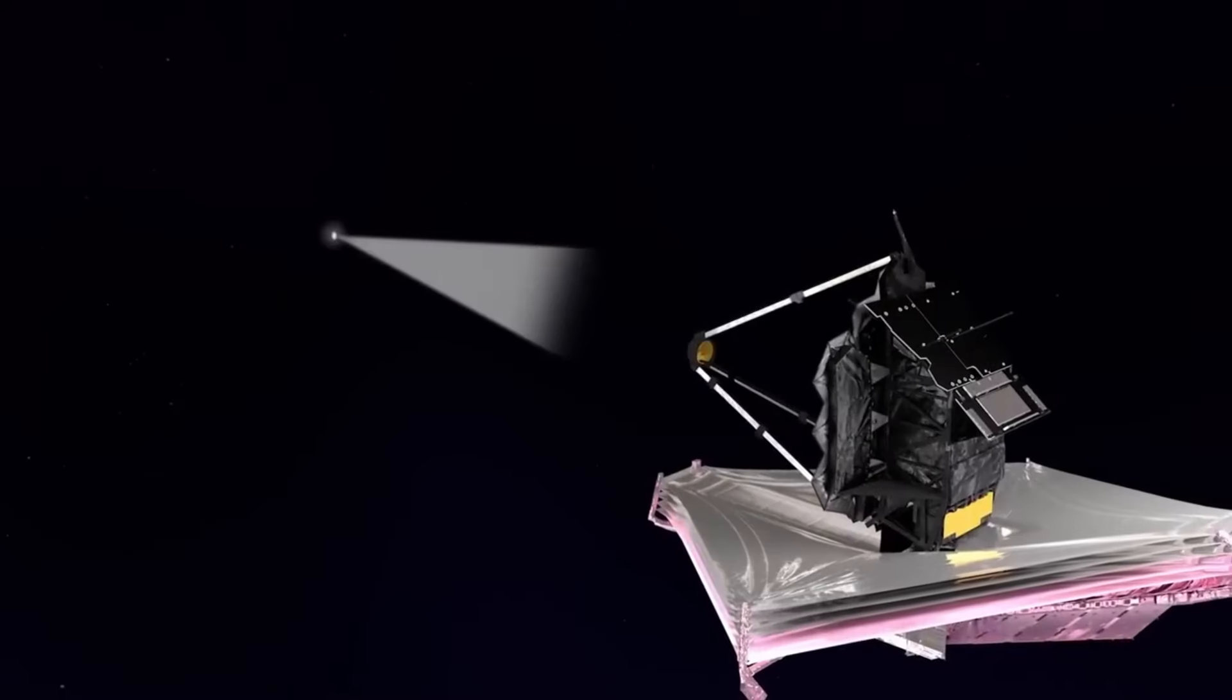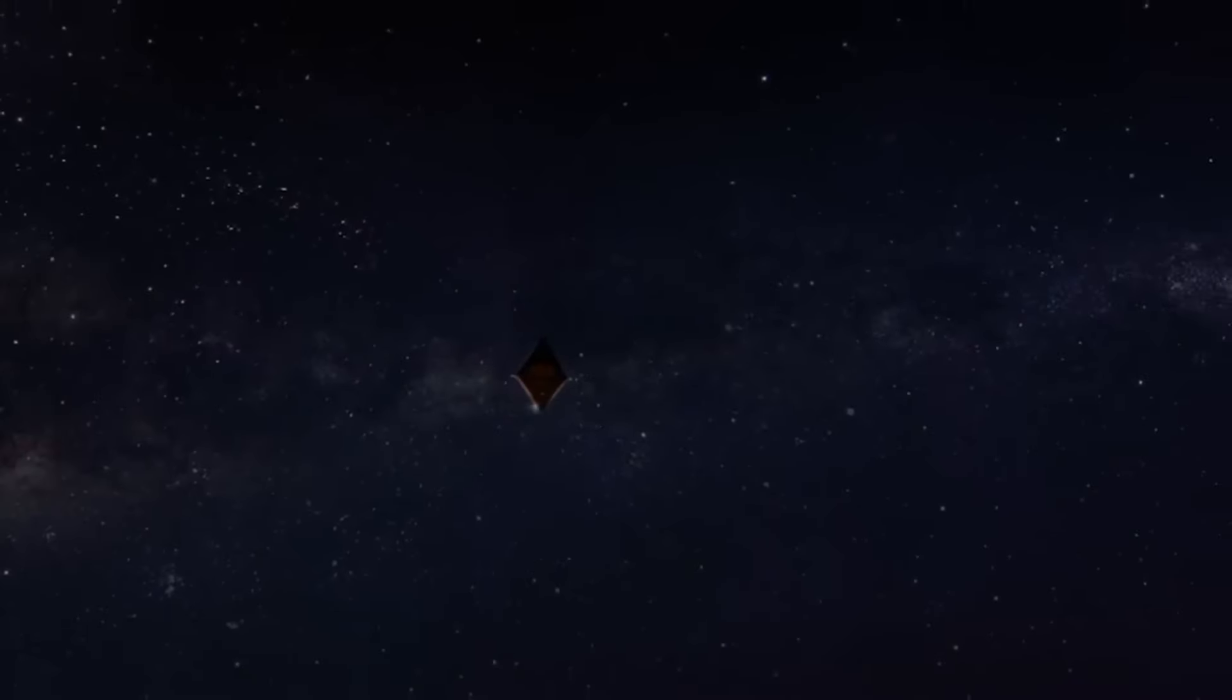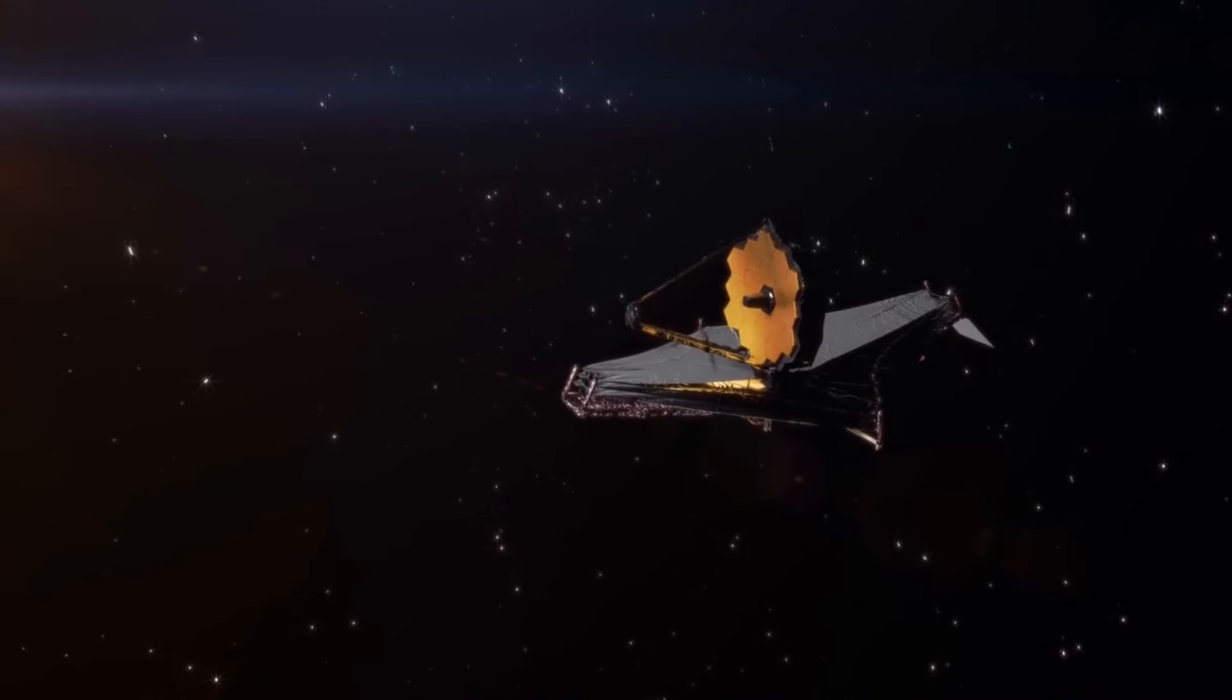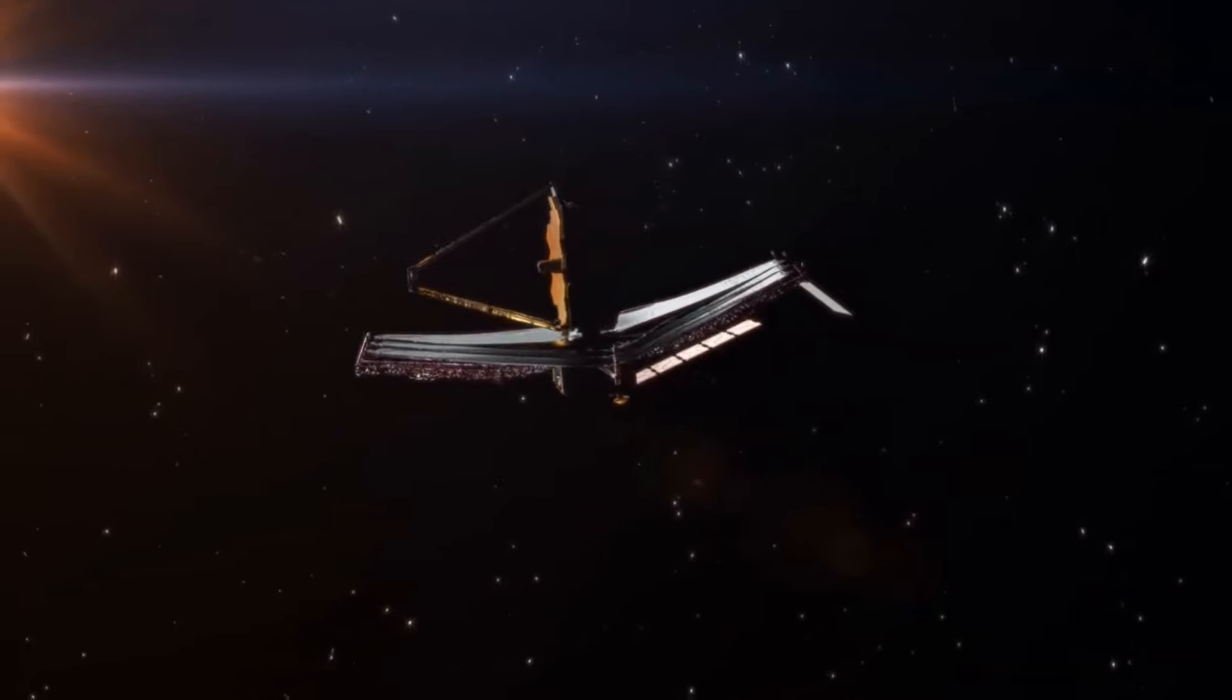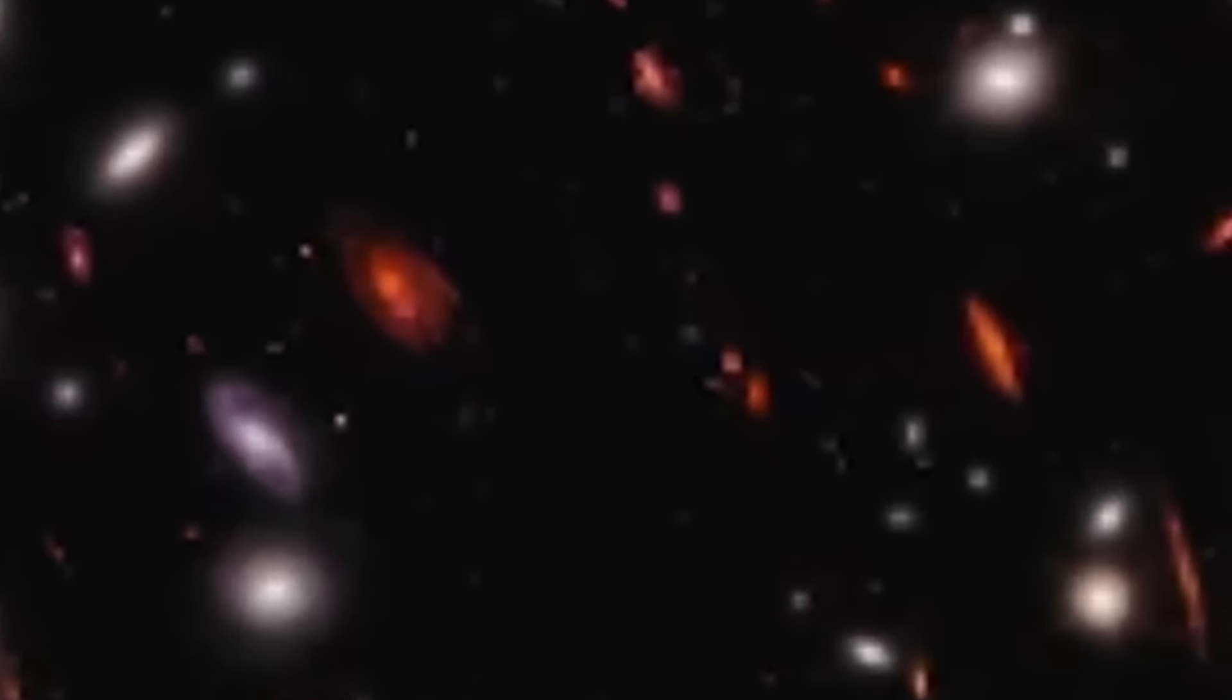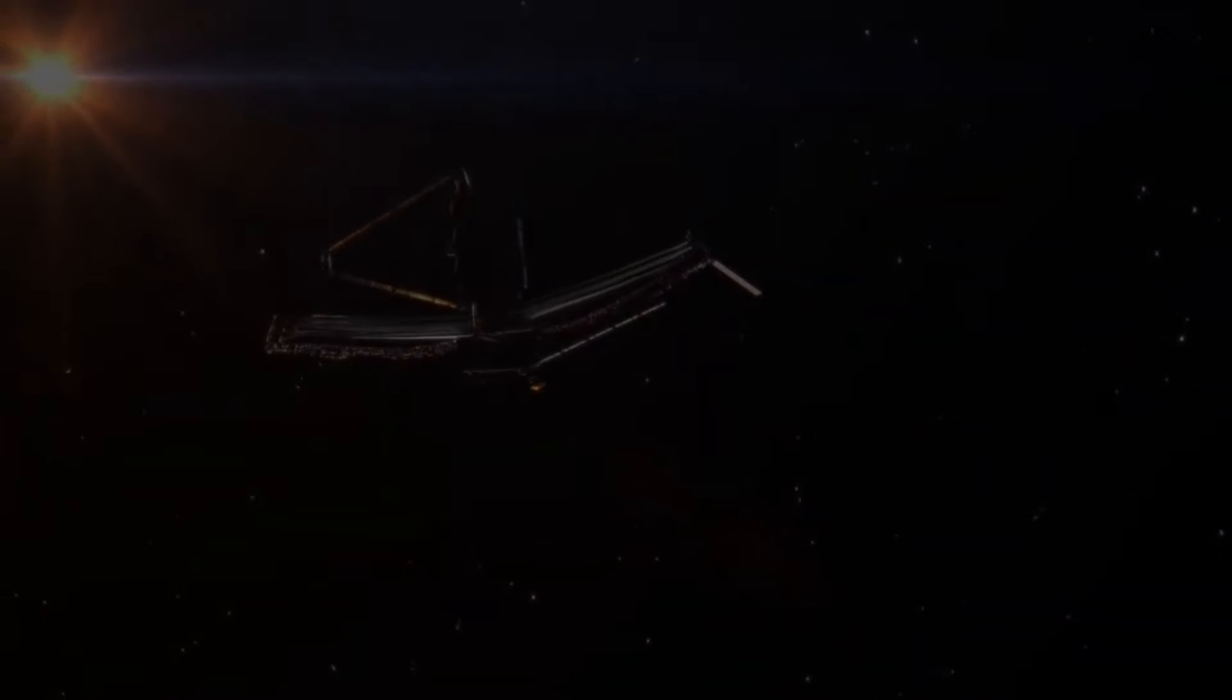The James Webb Space Telescope was humanity's first pioneering attempt at capturing the first lights in the universe. This marvelous structure, half as big as a 737 aircraft with a sun shield the size of a tennis court, was made with a budget of around 10 billion US dollars with the relentless effort of scientists from NASA, ESA, and CSA for over three decades.